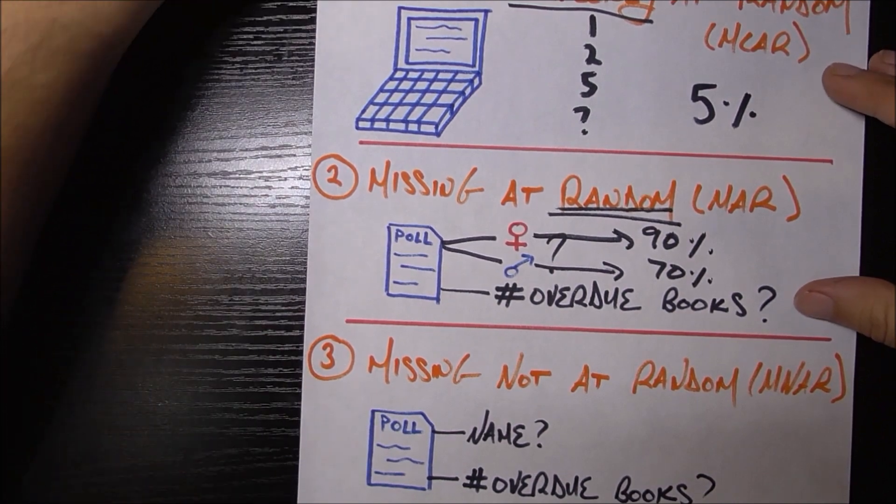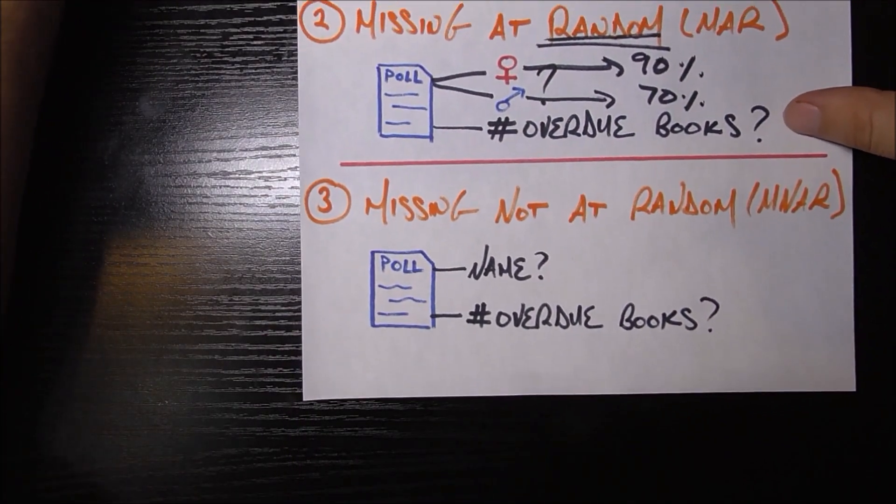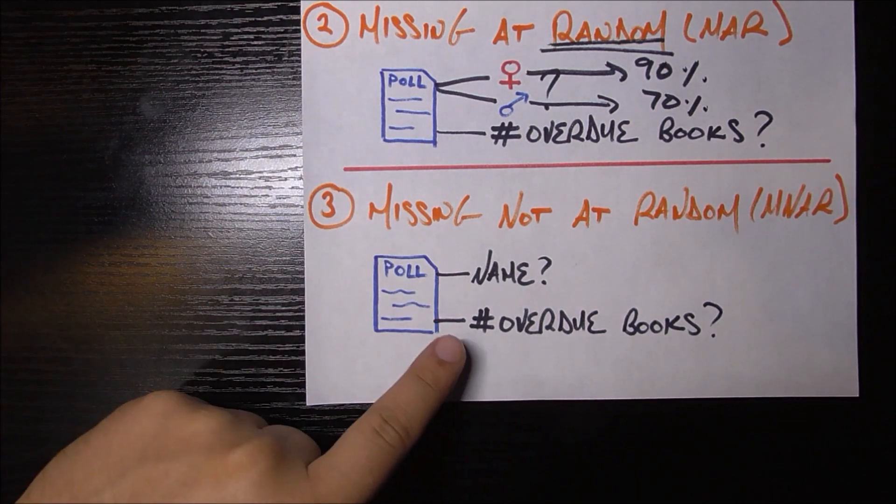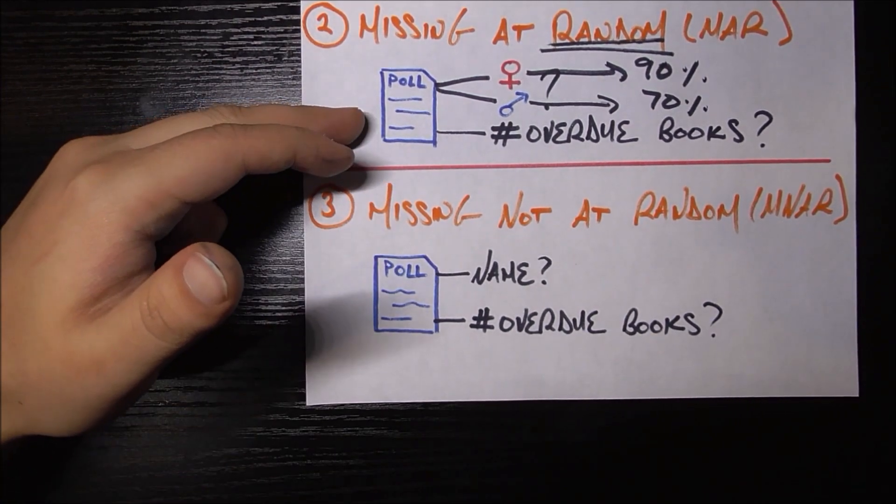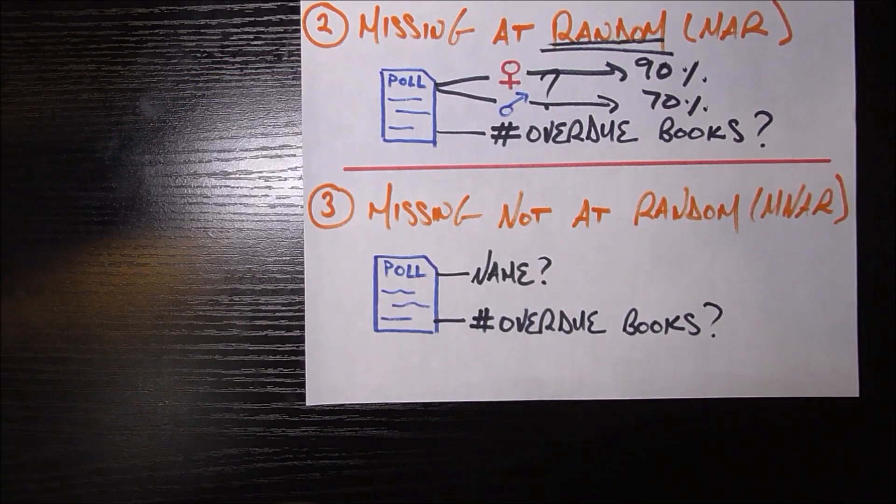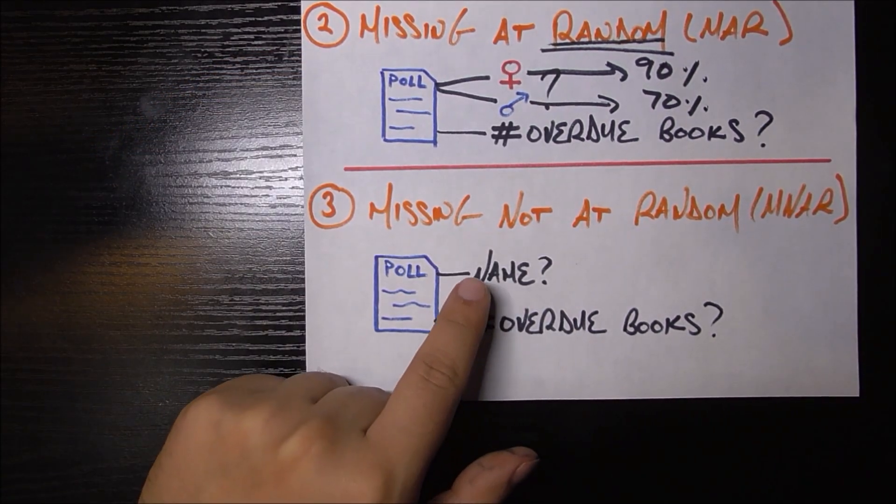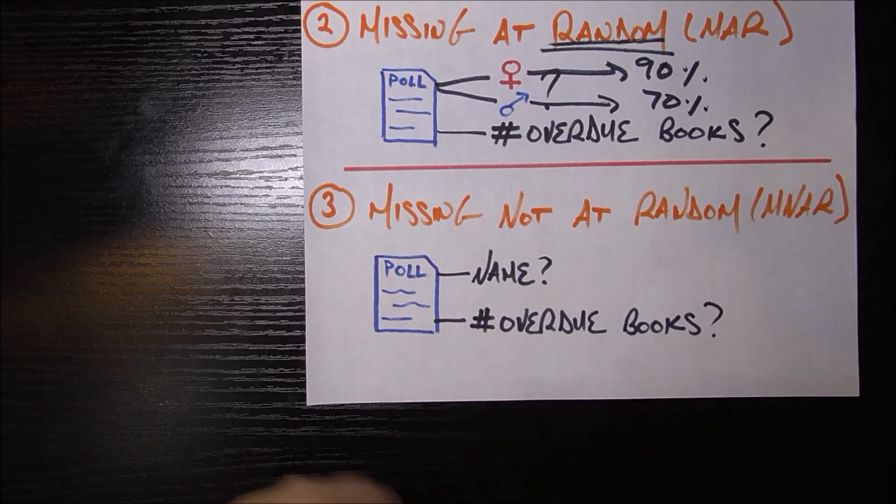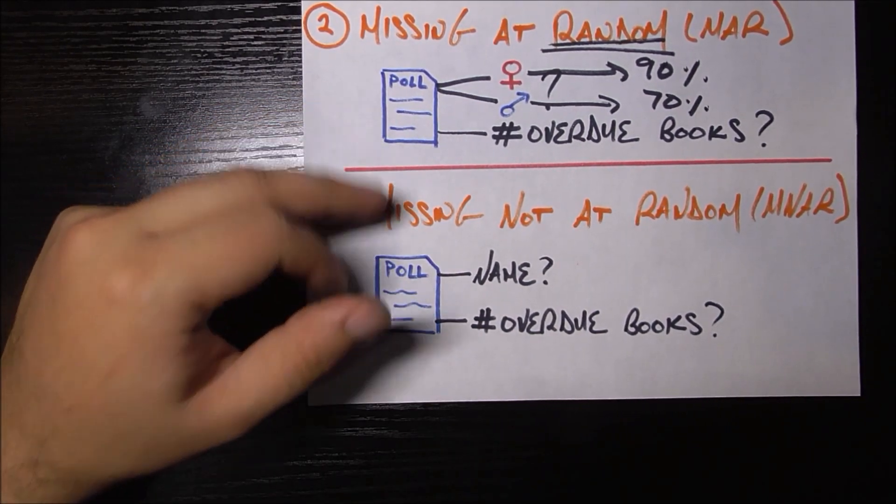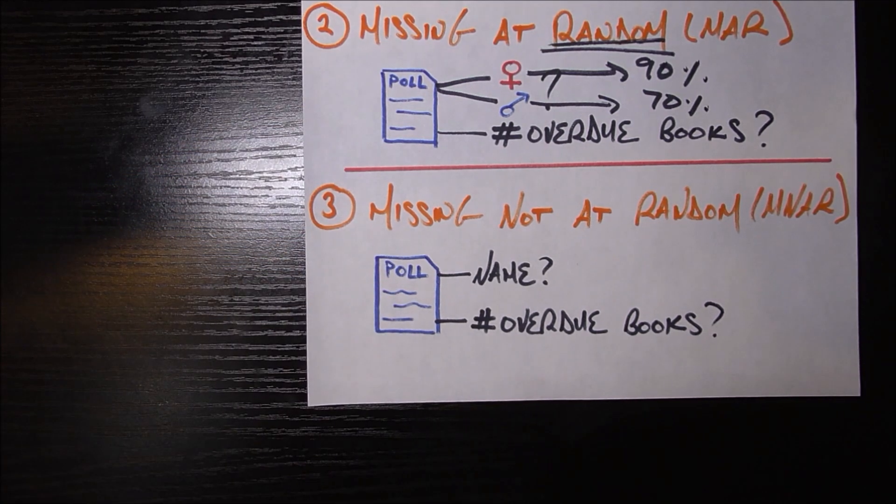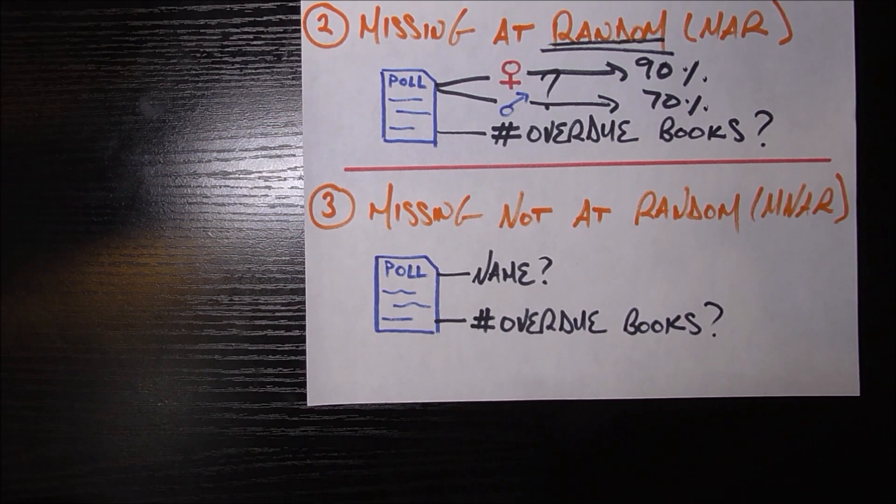Now the last kind of example of missing data is also the most nefarious one, and it's called missing not at random. So in this case, let's say instead of having the poll asking about whether male or female, you literally ask them what's their name, and you ask them how many overdue books do you have. Now this is fundamentally different from the poll above, because in this bottom case where you ask them their name, you can identify this person.